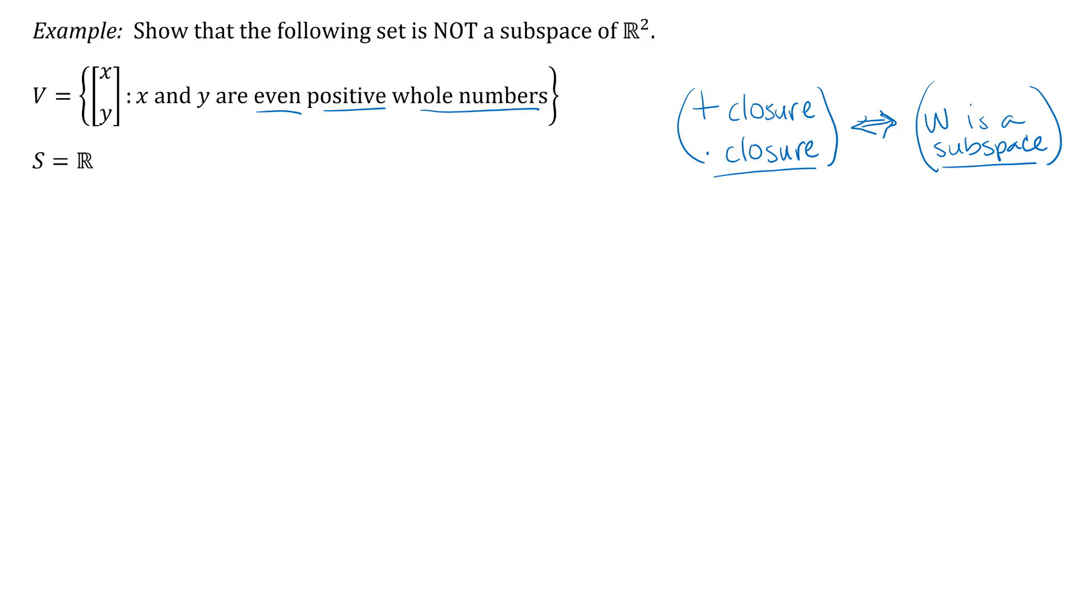So if you're not sure and you're just playing with it, you might write down some examples of things that would be in this vector space. So even, so that means divisible by two, so numbers like two, four, six, eight, ten, twelve; positive, so that means greater than zero; and whole numbers, so no decimals or fractions. So even positive whole numbers, so things like [2,4] would be in our set V, [10,2] things like that would be in our set V. But things that would not be in our set V would be things like the zero vector or also things like [1,2], so I couldn't have any entries that are one. So neither of these would be in our set V because it requires that both of our entries are even positive whole numbers.